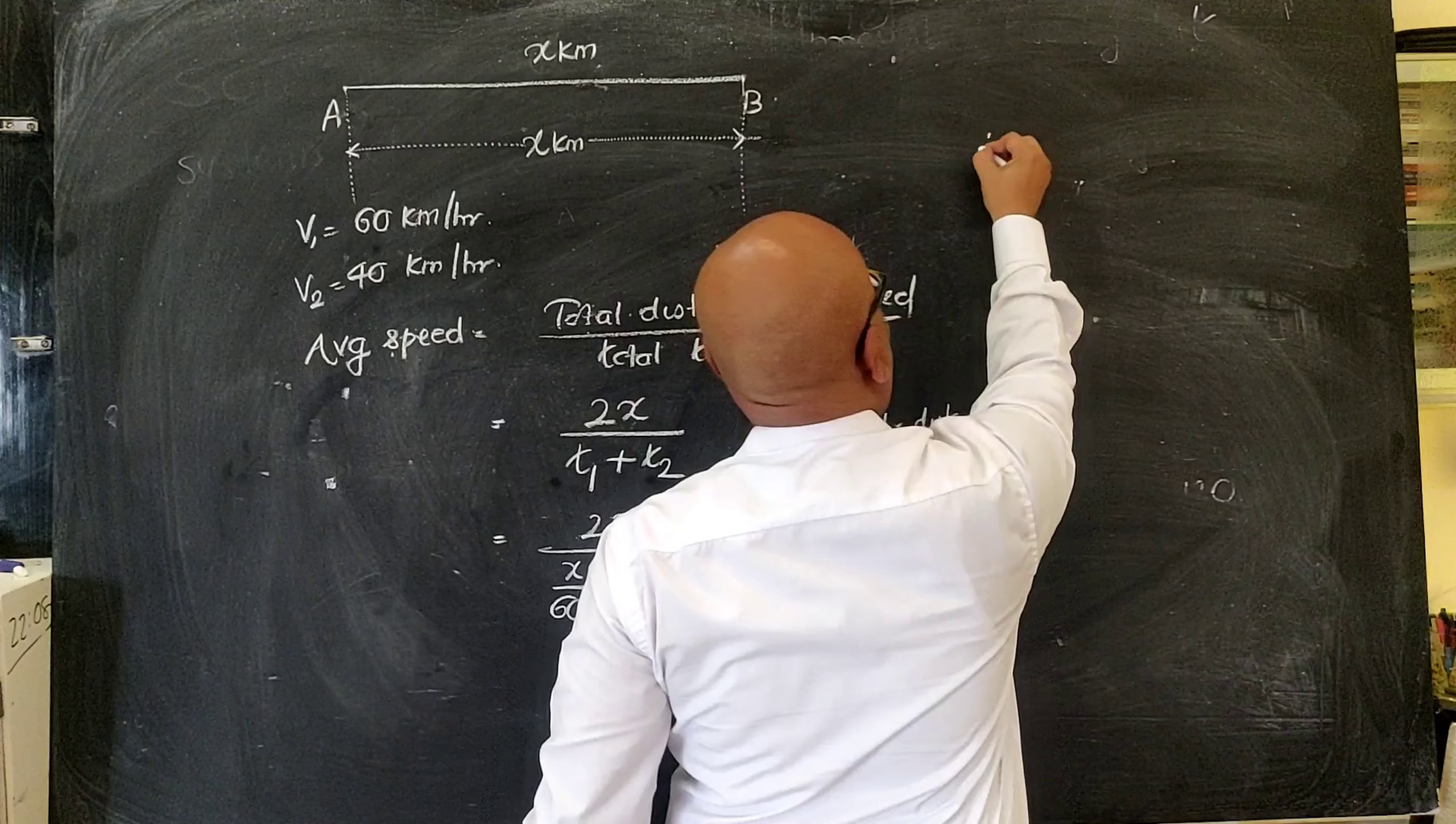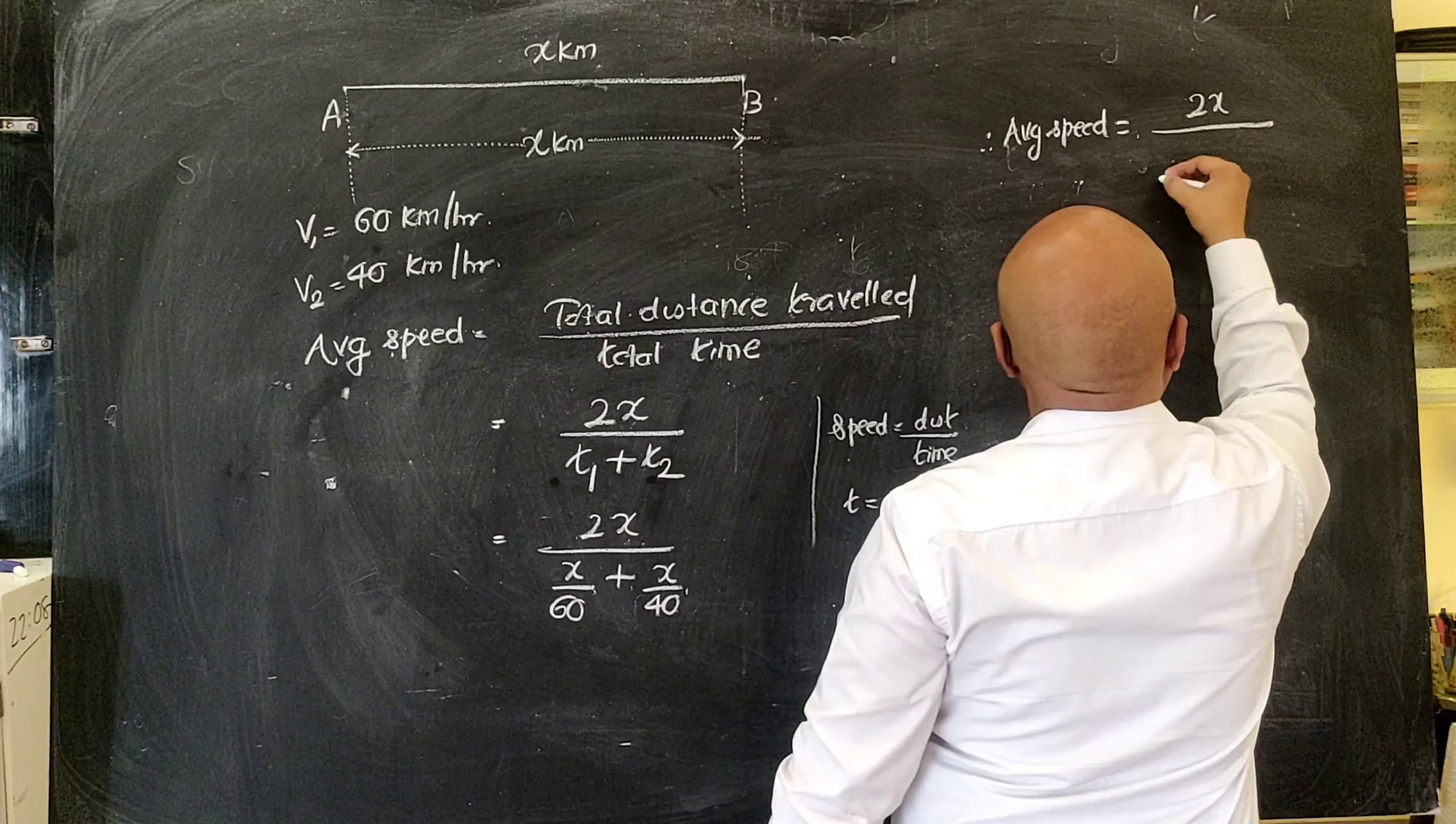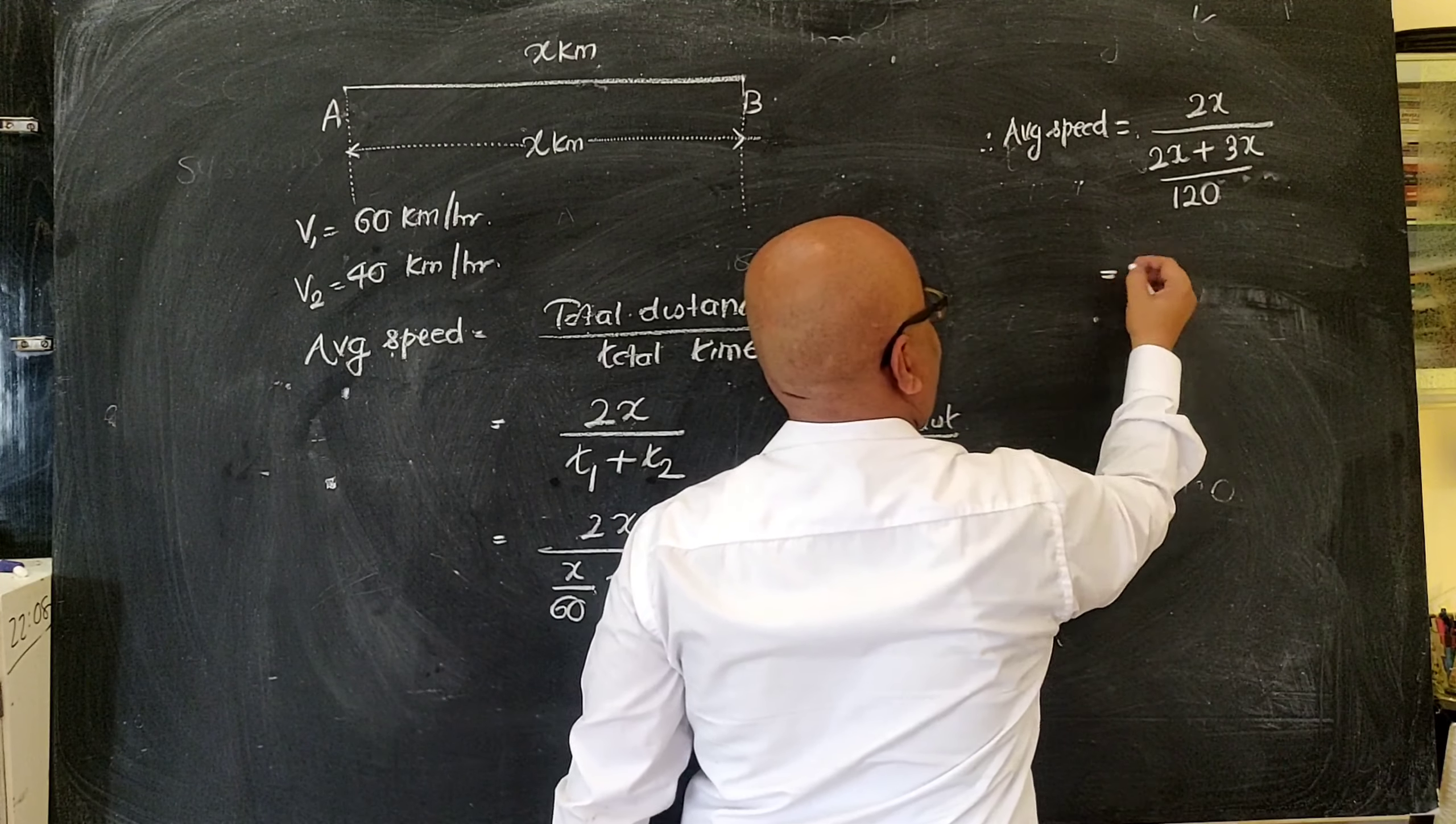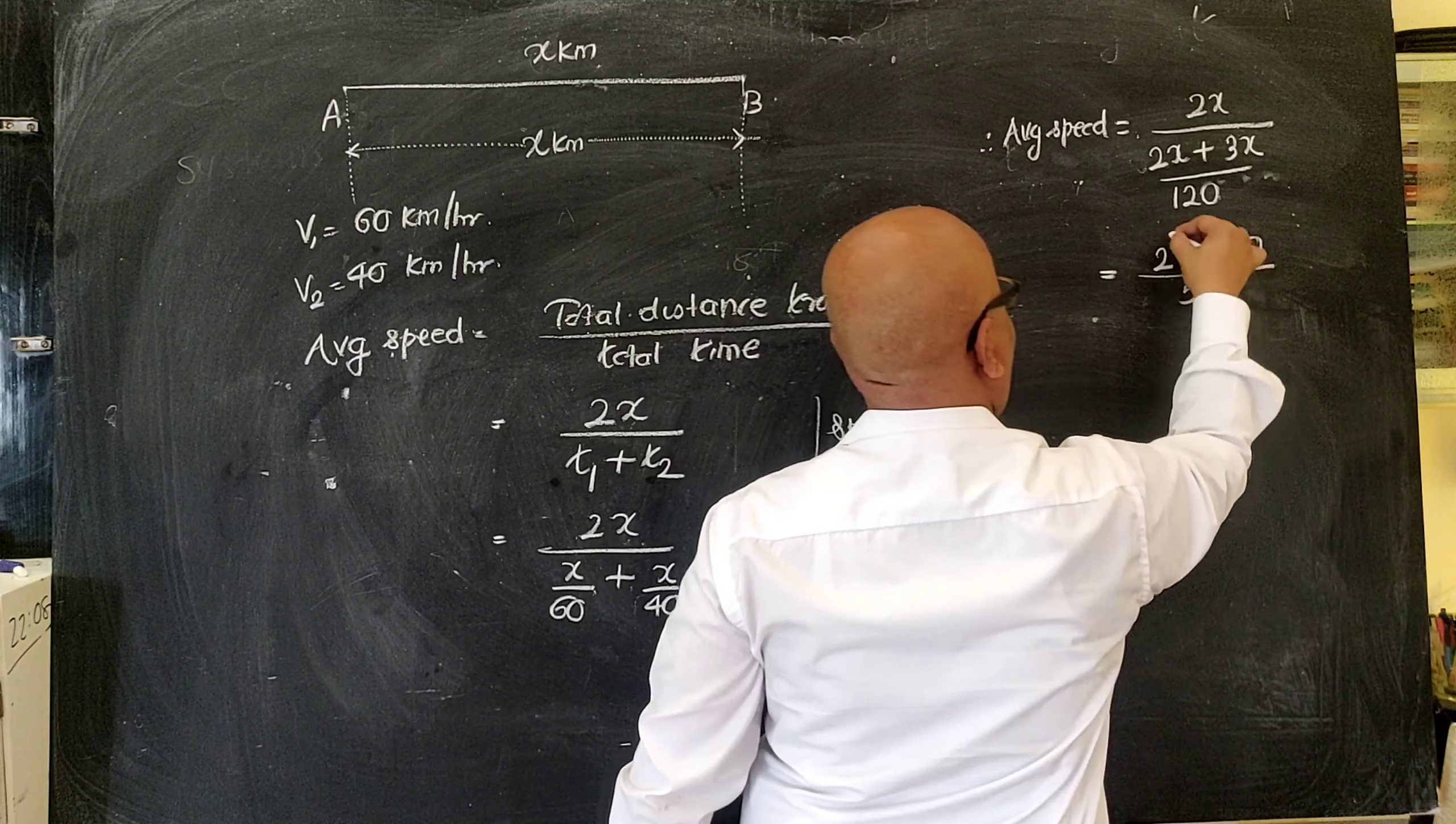Therefore, average speed is equal to, now 2x upon the LCM of 60 and 40, 120. So I will have over here 2x plus 3x. This is equal to, a denominator of a denominator goes to a numerator. 2x into 120 upon 5x.